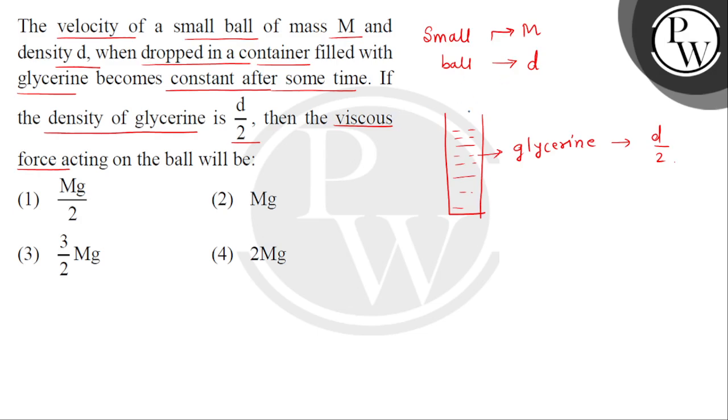अब इस small ball को जब हम इस glycerin में dip करते हैं, तो कुछ time बाद इस small ball की जो falling velocity है, speed है, वो constant हो जाती. It means इसने terminal velocity acquire कर ली, that is by the Stokes law.